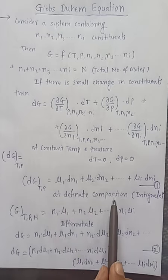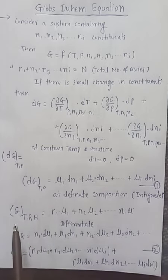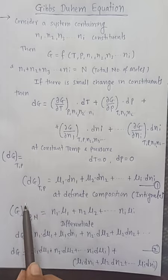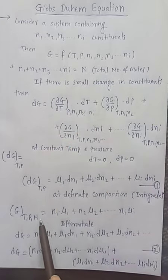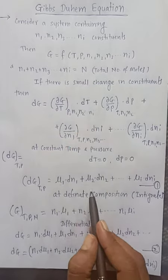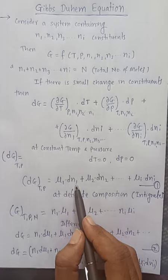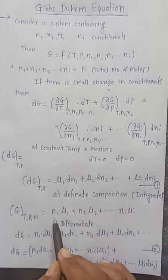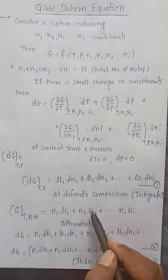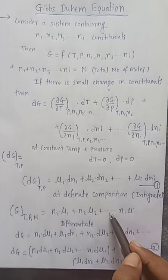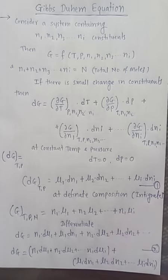At definite composition we integrate this equation. The integral of dG is G, so integrating at constant T, P and N (total number of moles), the integral of dN1 is N1, integral of dN2 is N2, and so on. Therefore G equals N1·μ1 plus N2·μ2 plus N3·μ3, and so on, plus Ni·μi.